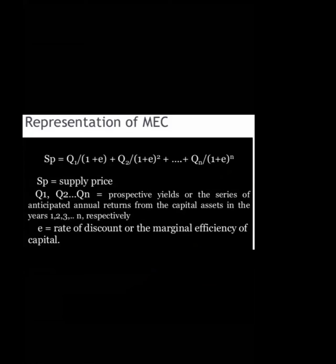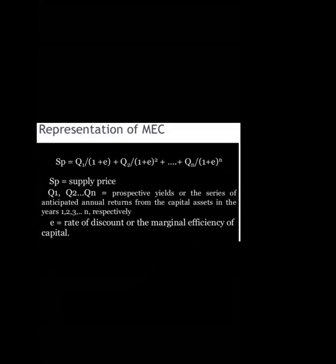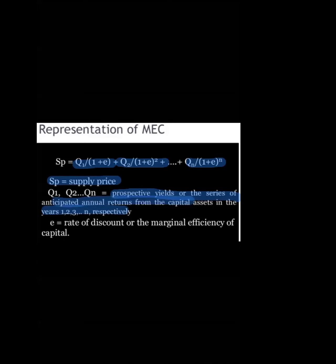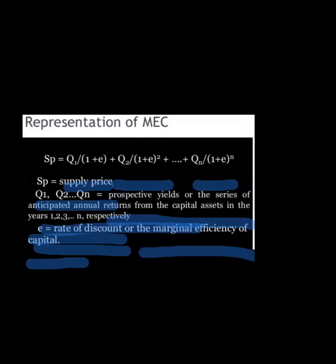The marginal efficiency of capital is represented mathematically as: SP = Q1/(1+E) + Q2/(1+E)² + ... + QN/(1+E)^N. Here, SP means supply price; Q1, Q2, through QN represent the prospective yield — that is, the anticipated annual returns from the capital asset in years 1, 2, up to N; and E represents the rate of discount, which is the marginal efficiency of capital.